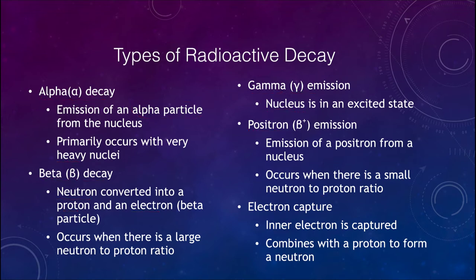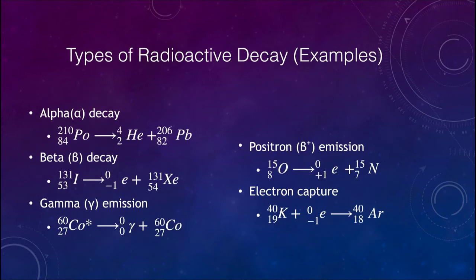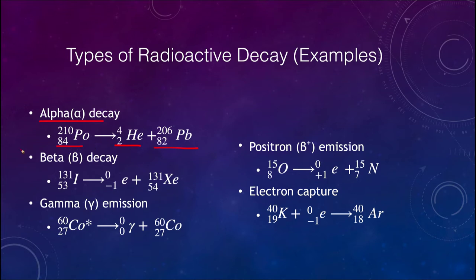Let's look at some examples of these in equation form. For alpha decay, polonium-210 gives off a helium nucleus — an alpha particle — to become lead-206. Remember that everything must balance: the atomic mass of 210 equals 206 plus 4 on the right, and the charges balance as 84 on the left equals 82 plus 2 on the right.